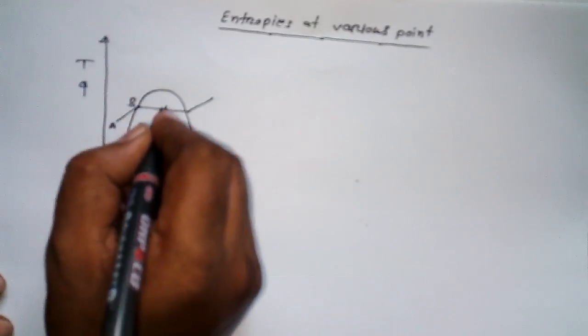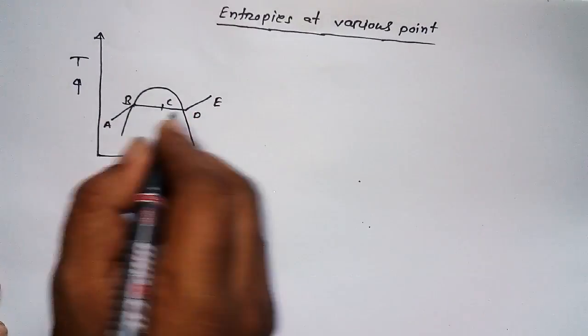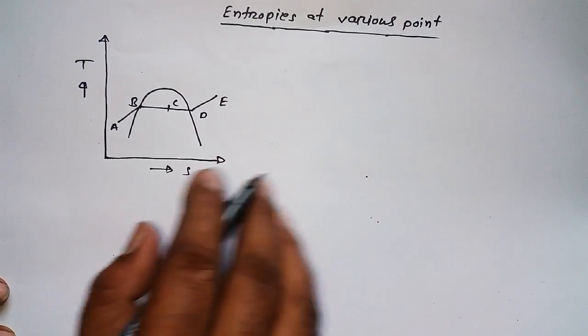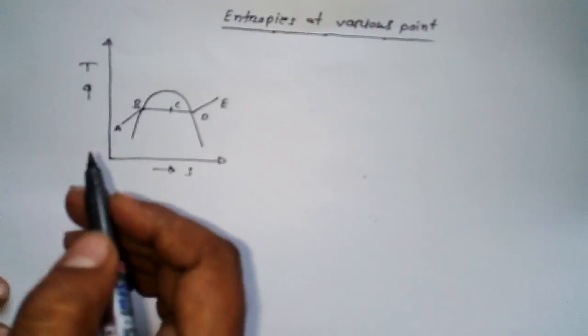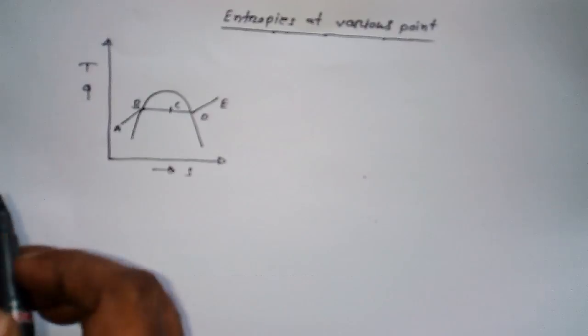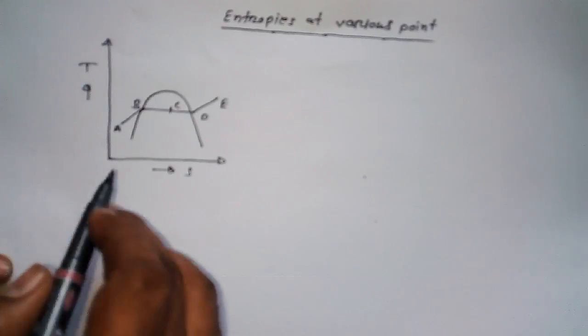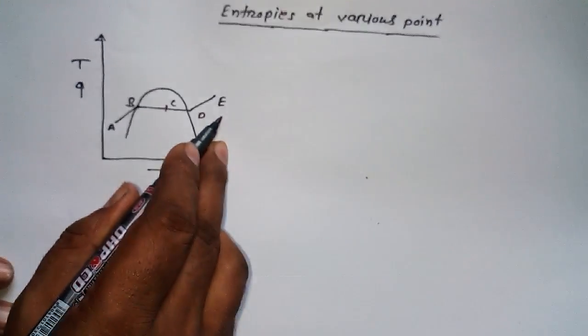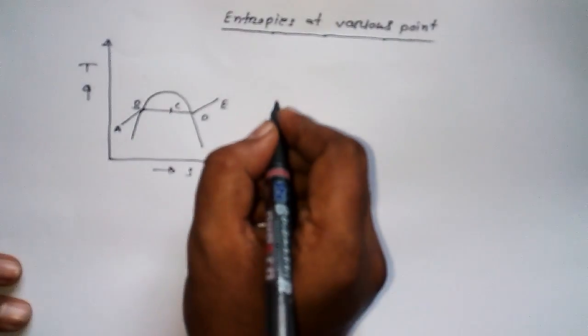Points A, B, C, D, E. Now what we are going to do here is write formulas for finding out entropy at these all points.